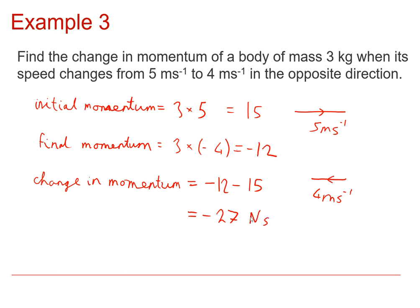Now I could leave it as minus 27, having defined right as being the positive direction, or I could say that it's 27 newton seconds in the opposite direction, as long as it's clear what the direction is, as well as the size, when you're talking about momentum, and changes in momentum.